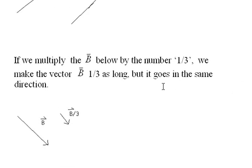If we multiply b below by one-third, we make the vector b one-third as long, but it goes in the same direction. So here's b going this way, and here's b over 3, or one-third times b. Notice it looks at one-third as long.